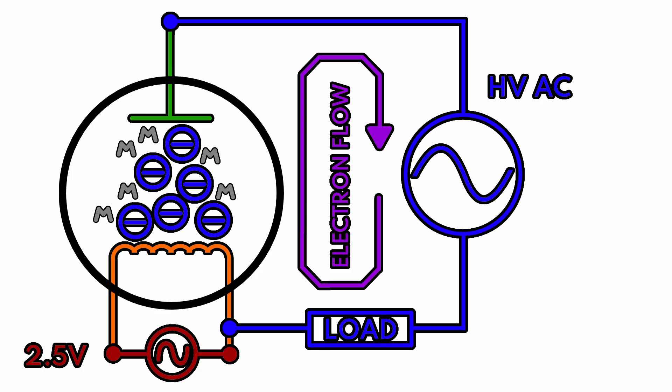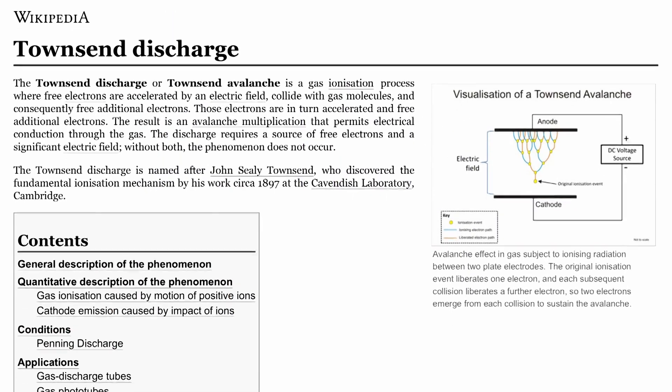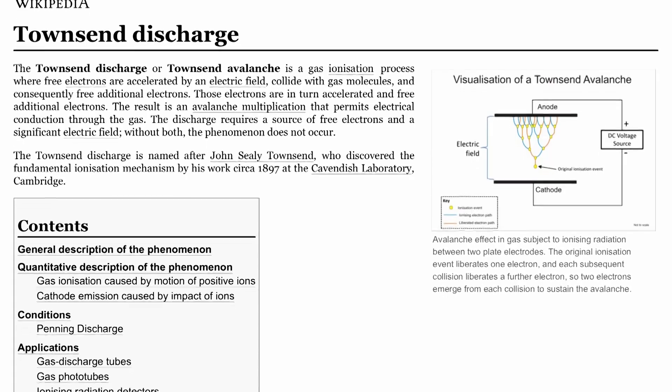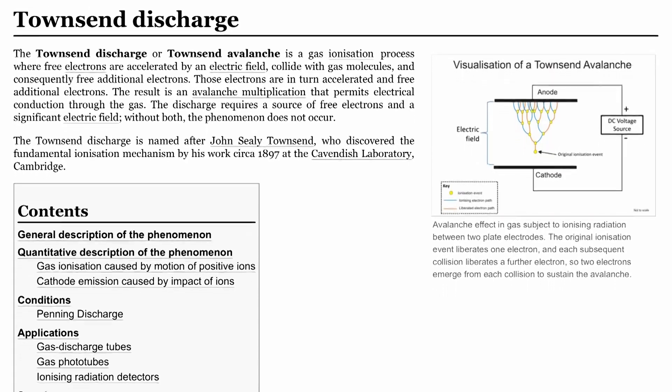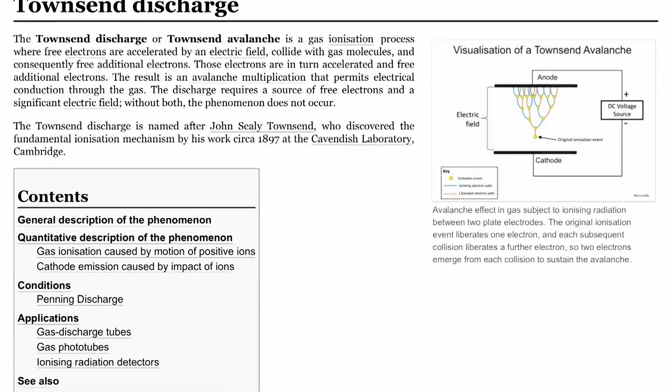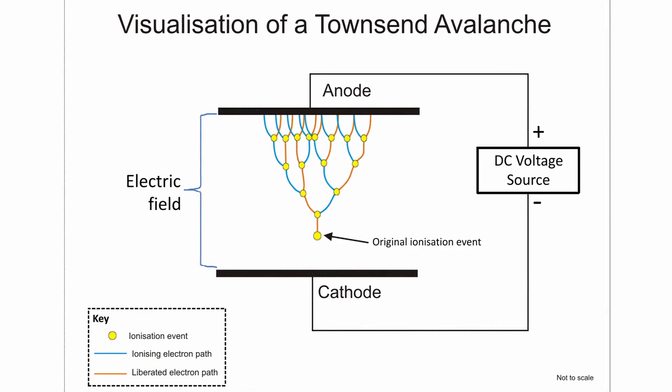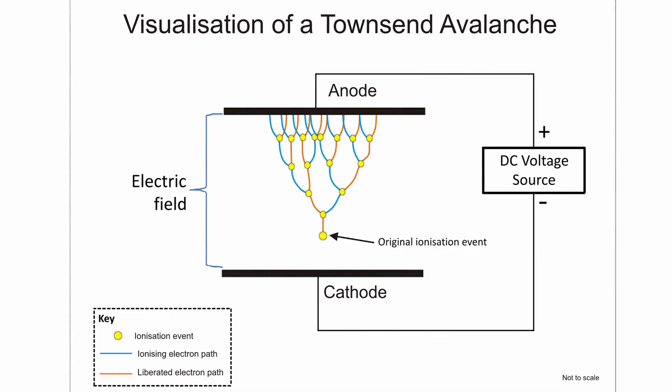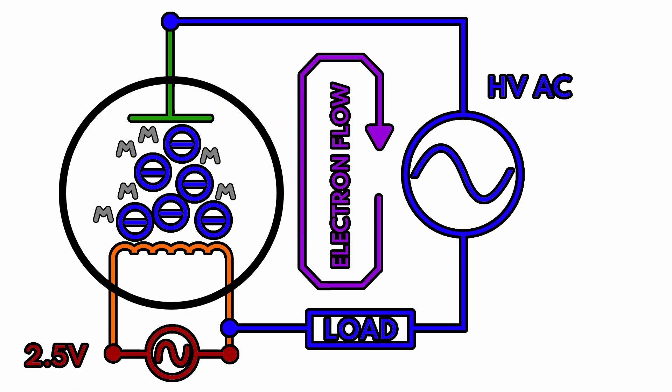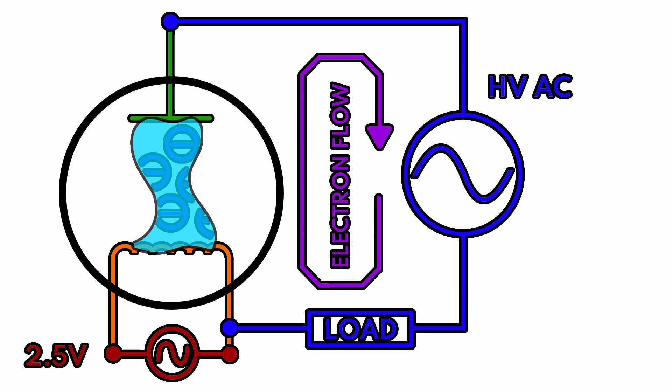And essentially what's happening is as those electrons are flowing from the cathode to the anode they're striking the mercury vapor and causing it to get excited, and then it goes into something that I think is called Townsend discharge. It's kind of like an avalanche in that one particle of mercury vapor gets excited and throws off some electrons that bounce into other particles of mercury vapor. They get excited and throw off more particles, and it just cascades until you have essentially a conduit of plasma connecting the anode to the cathode.